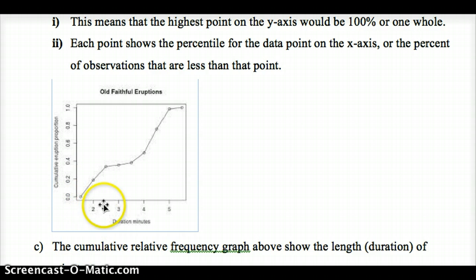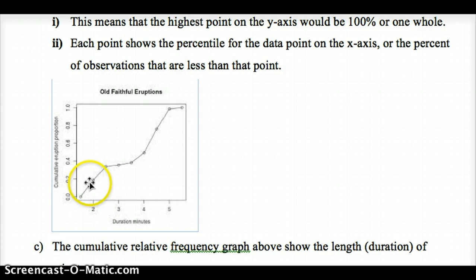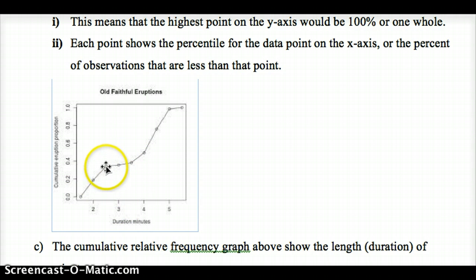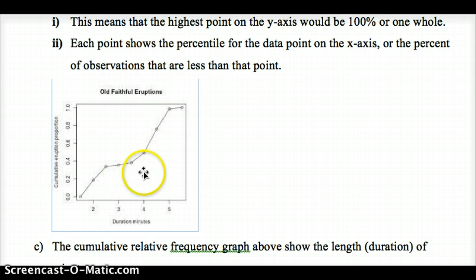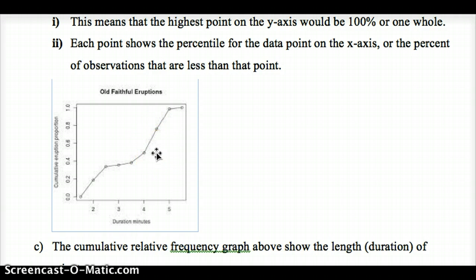We can see that if we line up with 2 on the x-axis, that means a 2-minute eruption from Old Faithful lines up with 20% on the y-axis. That means 20% of Old Faithful eruptions are less than 2 minutes. Where the slope is higher, we have more data points; where the slope is lower, we have fewer data points, because the distance between 2.5 to 3 is very slight, meaning we don't have many eruptions in that interval.